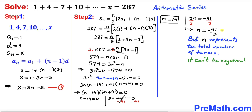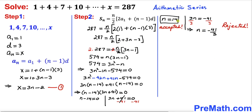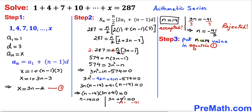We can see that n equals negative 41 over 3 is a negative number, and since n represents the total number of terms, it cannot be negative. Therefore we reject this negative value of n and accept the positive value: n equals 14.